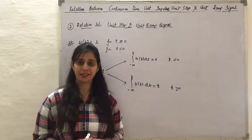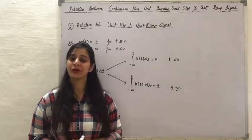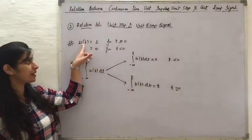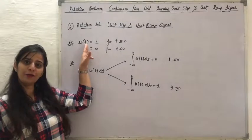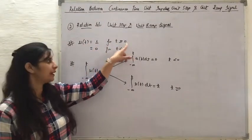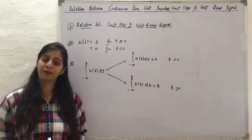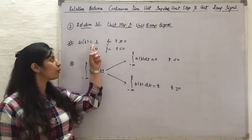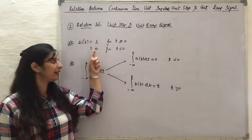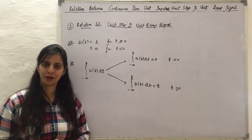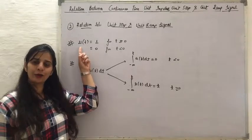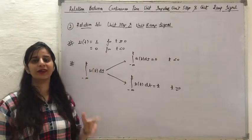Let us now see the relation between the unit step signal and the unit ramp signal. The unit step signal is defined as equal to 1 for t greater than or equal to 0, and 0 for t less than 0. We know that the integration of 1 with respect to t equals t, and the integration of 0 is always 0. Let us apply integration to this signal to obtain its relation with the unit ramp signal.